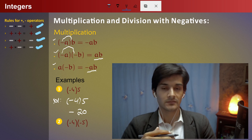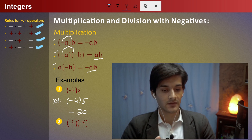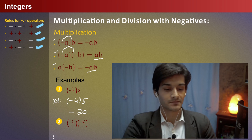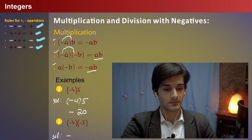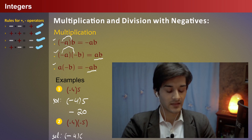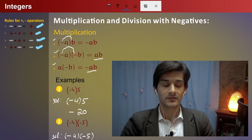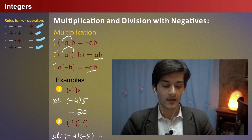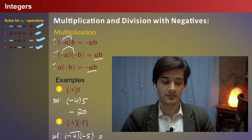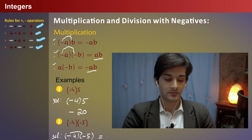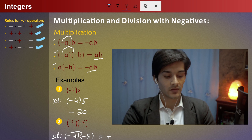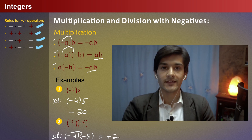In this example, minus four multiplied by minus five. The solution is that negative integer multiplied by negative integer gives a positive result. The minus of minus multiply is plus. Five multiplied by four is equal to twenty.